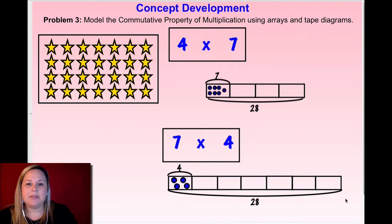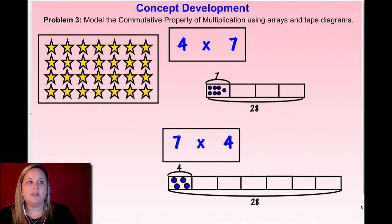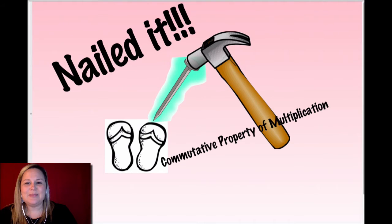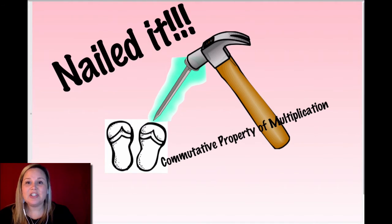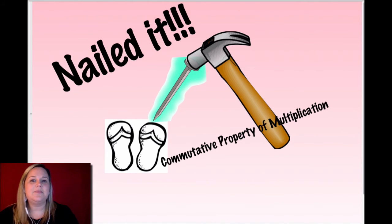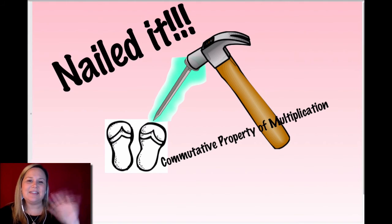Hopefully your multiplication equations, tape diagrams, and array look similar to mine. This was all about modeling the commutative property using arrays and tape diagrams to know there are two different ways you can solve each problem. Good job, friends — you nailed it with the commutative property of multiplication! It's a lot of work to draw those all in different ways, so you did a fantastic job. Please head back to the module to see what you need to complete for your independent practice today. Let me know if you have any questions, and I hope you have a fantastic rest of your day flip-flopping around with the commutative property of multiplication. Have a good day, friends!